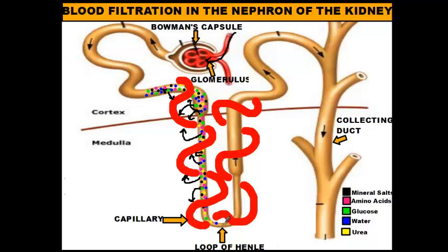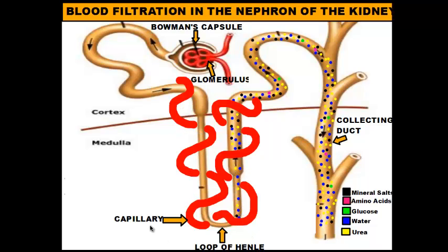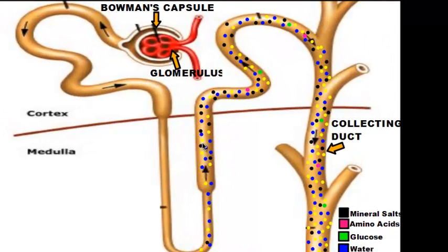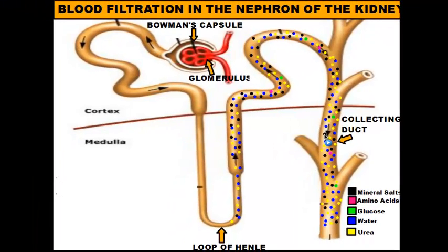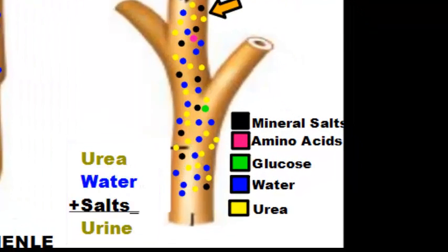After the loop of Henle reabsorbs the needed nutrients, what remains is just the waste products. If we take away the capillary from the view, what you see is a concentrated solution of water, salts, and urea. There may be a handful of glucose and amino acid molecules that didn't get reabsorbed, but the major components of this solution are urea, water, and salts. As they make their way down through the collecting duct, this combination of urea, water, and salts is what we call urine.